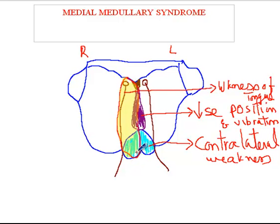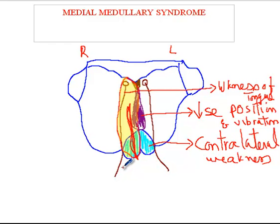Now what blood vessel supplies this? It's the anterior spinal artery, which is a branch that comes out of the vertebral artery. So it's the anterior spinal artery that supplies this whole area. Either there's a problem with the vertebral artery or the anterior spinal artery. Also keep in mind that the medial medullary syndrome may not be a complete syndrome — you may only have involvement of the corticospinal tract and medial lemniscus.